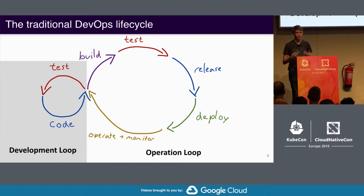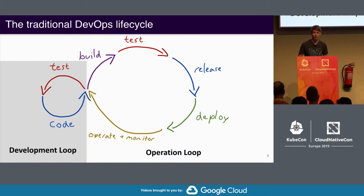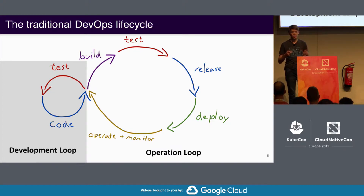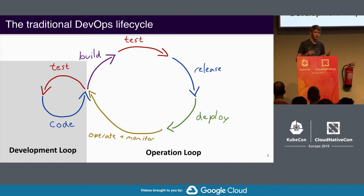Once you monitor it, you'll find new bugs, new performance issues, and missing features, which basically start this development loop in turn again. So the question is: how does this change in serverless computing — this basically DevOps loop?